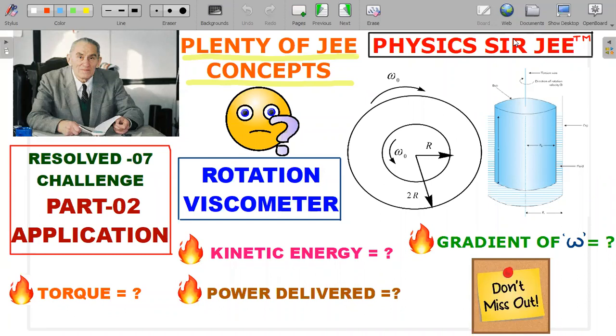We are going to now present a problem which is the part 2 or the application part of the Resolved 7 video challenge that you were given already. It involved the description of rotation viscometer and also Irido problem of 1.333, in which Irido was writing the shear stress on that particular layer of cylindrical element as proportional to the angular velocity gradient.